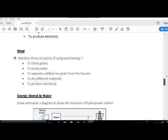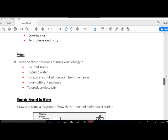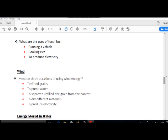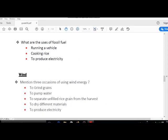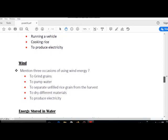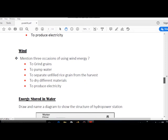Wind: Mention three occasions of using wind energy. To grind grains, to pump water, to separate unfilled rice grain from the harvest, to dry different materials, and to produce electricity.